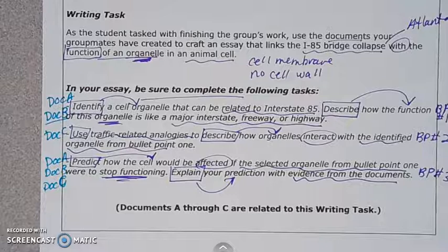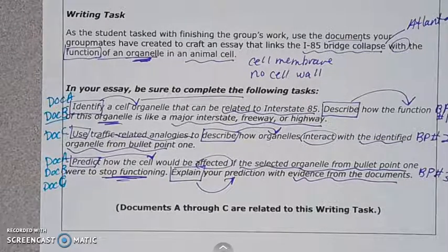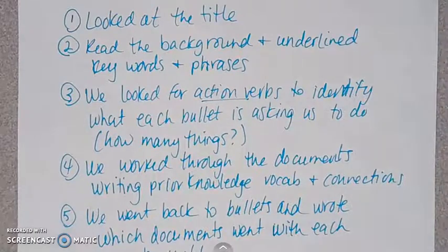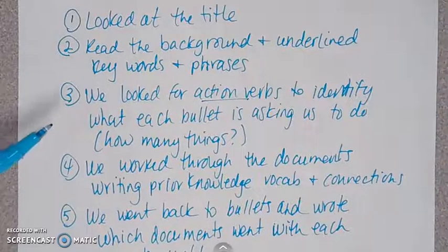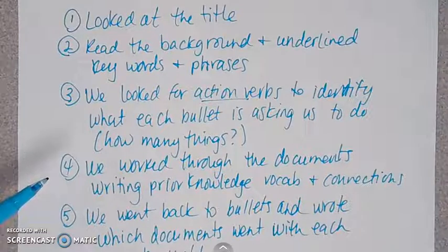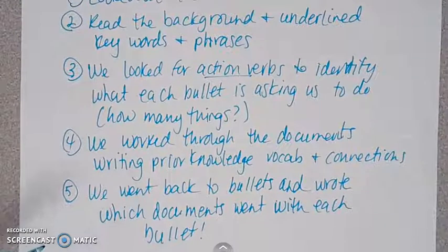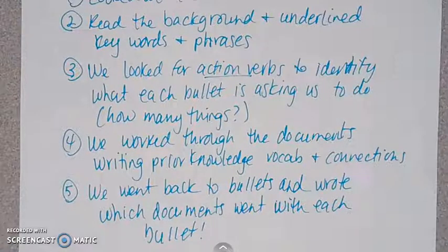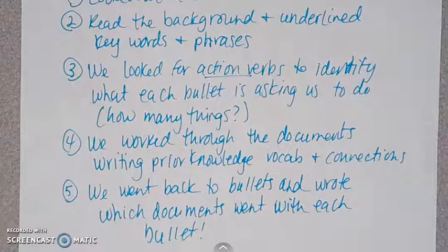To visually recap: we looked at the title, read the background and underlined keywords, identified action verbs in each bullet to know exactly what's required, worked through the documents writing prior knowledge and content vocab, made connections between bullets and documents, and wrote which document to use for each body paragraph. I really hope you utilize this strategy for the Gateway. Sean will decode a social studies prompt in Episode 5 — check the links below. Thanks for stopping by, and post any questions in the comments!